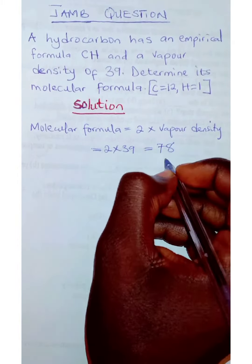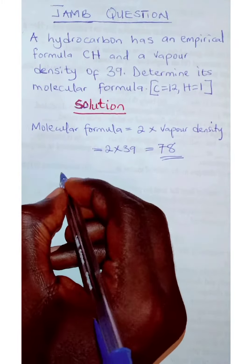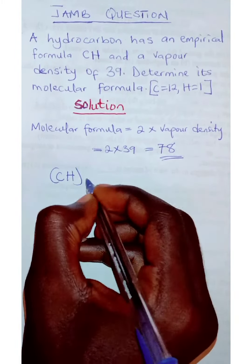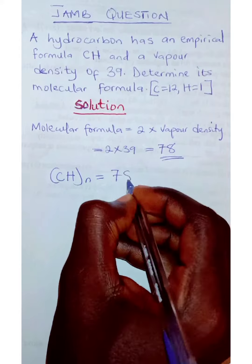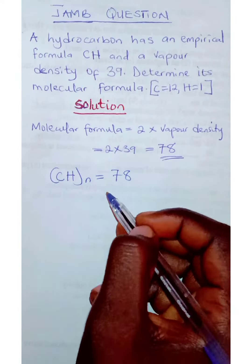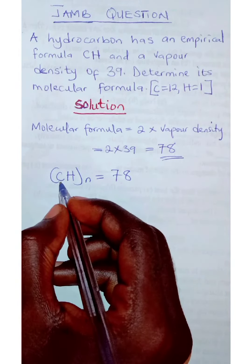So once you arrive at this, then you come in and plug your value. (CH)n is equal to 78, and then the next thing we have to do here is to add up the masses.